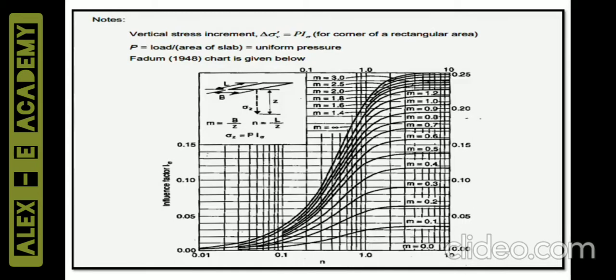We had discussed in the case of the rectangular loading condition that we use certain terms namely M and N — smaller M and N — to find the influence factor value to substitute in the equation σ_z = q × I_n. In those problems we used to find the value of I_n from the given data in a tabular column after finding M and N. Now we can do the same procedure using Fadum's chart.